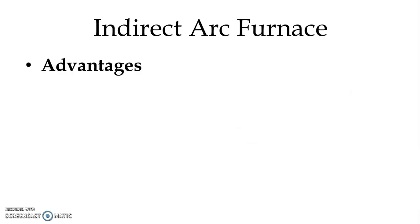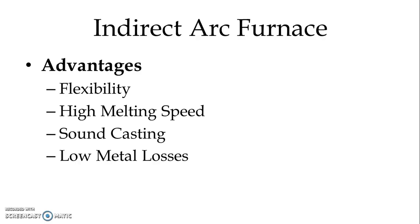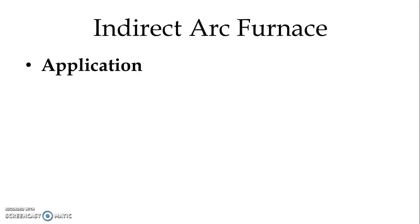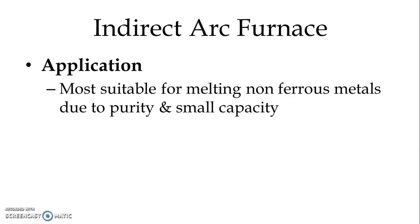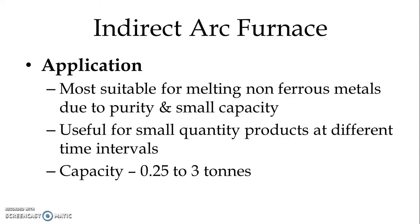Advantages of Indirect Arc Furnace: flexibility — the furnace can be used for different alloys. High melting speed. Very sound casting process is possible. Because the process is in a closed environment, metal losses are very low and the entire process is quite economical. Application: the indirect type of arc furnace is most suitable for melting non-ferrous metals due to purity and small capacity. Useful for small quantity products at different time intervals. Capacity: 0.25 to 3 tons.